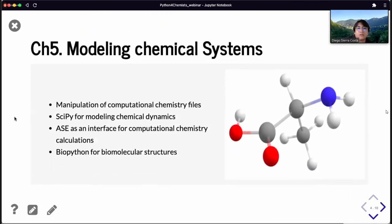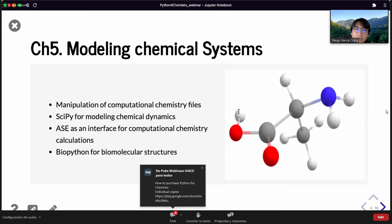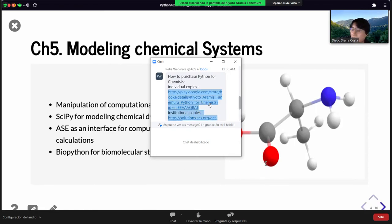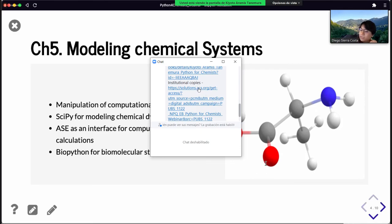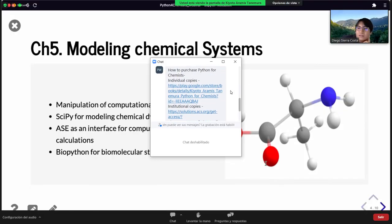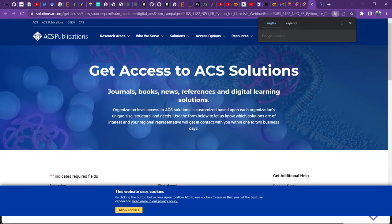In chapter five, we look at a little bit more complicated examples, how to deal with computational chemistry files from input and output, how to solve differential equations from a reaction using the package SciPy. We also use the package ASE, which is an interface for different computational chemistry programs. We will see how to perform a single point calculation, how to perform a geometry optimization. Finally, we would look at BioPython for how to deal with biomolecular structure data. Input files like from PDB or crystallography.